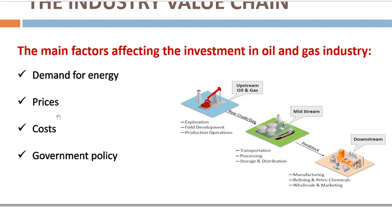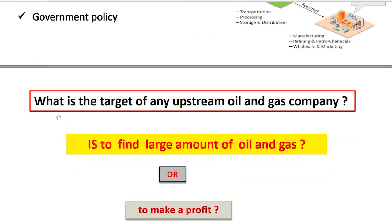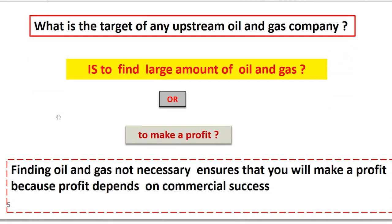As industry leaders, we must ask: what is the target of any upstream petroleum company? Our industry is just a gamble — we invest to win, we take risk to win. So our target is not just to find oil or gas, but to make profit. How much will we gain for each dollar we invest? Discovering a large amount of oil or gas does not necessarily mean we are going to make a profit, because profit depends on commercial success.